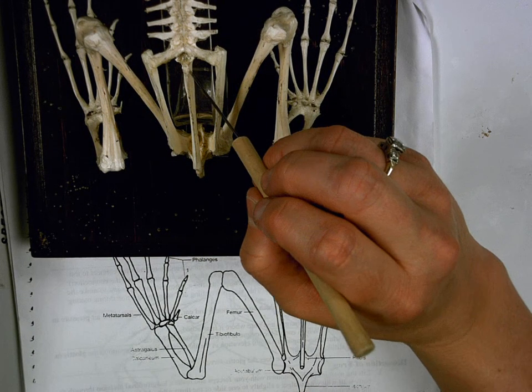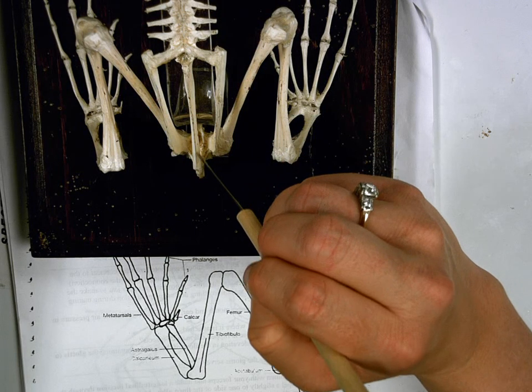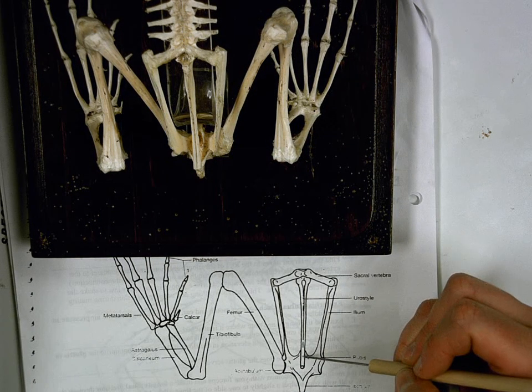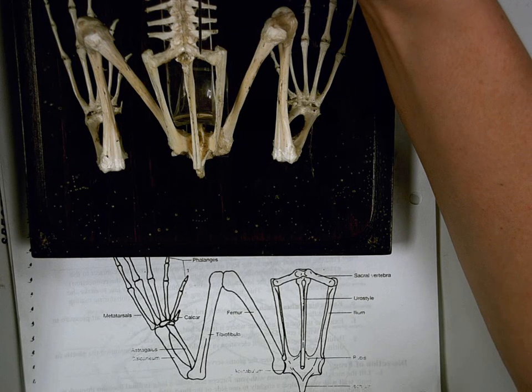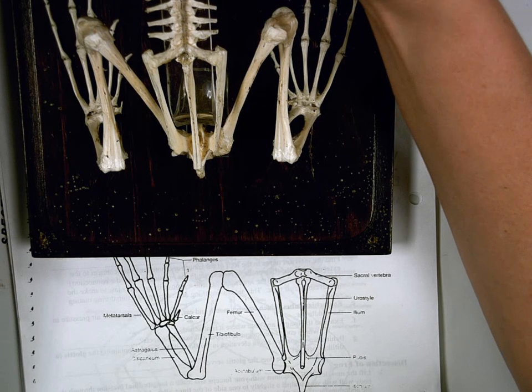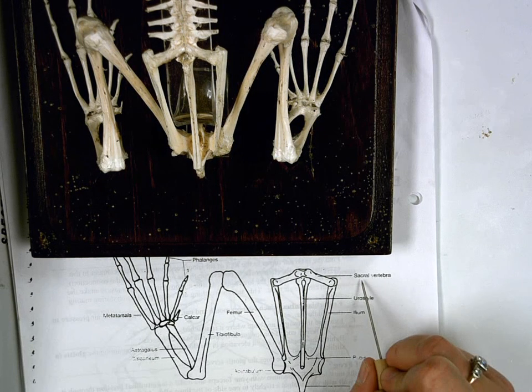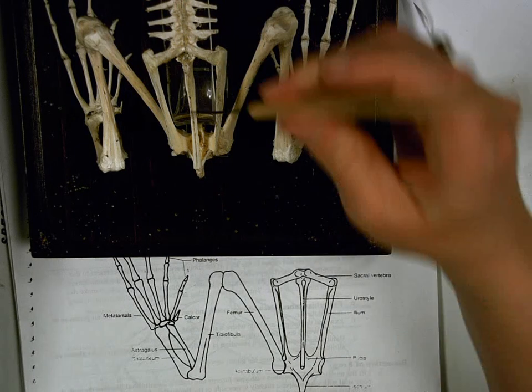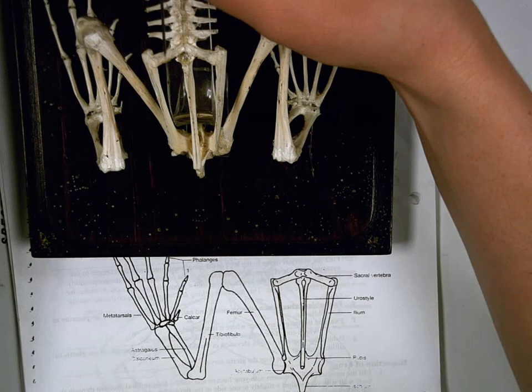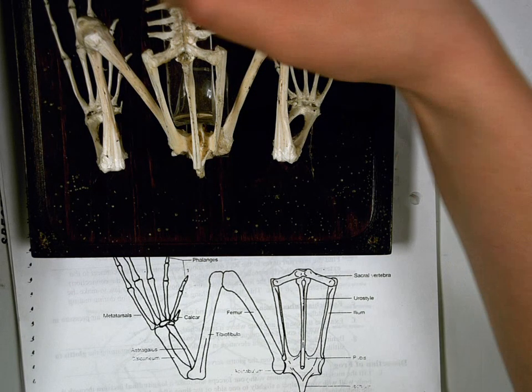We then have this bone in the middle of the frog going all the way down the middle. This is this one right here, which is the uro style. And then you have these two bones that link the two hip bones that go across the sides, which is the sacral vertebra, which are these ones right here, attaching our two ileum bones.